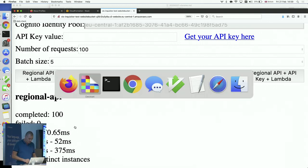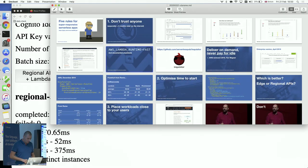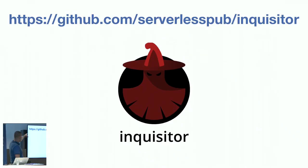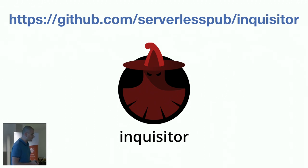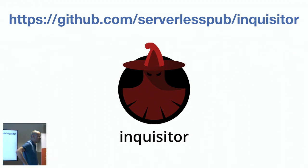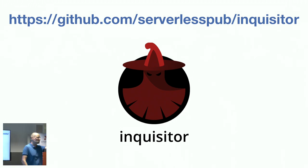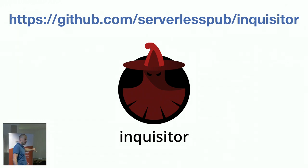You can find and download this tool at github.com/serverless-pub/inquisitor — we call it Inquisitor. It allows you to very easily deploy into multiple regions and test, for example, how latency behaves when connecting from Rome to Frankfurt versus from Rome to Oregon in the US.